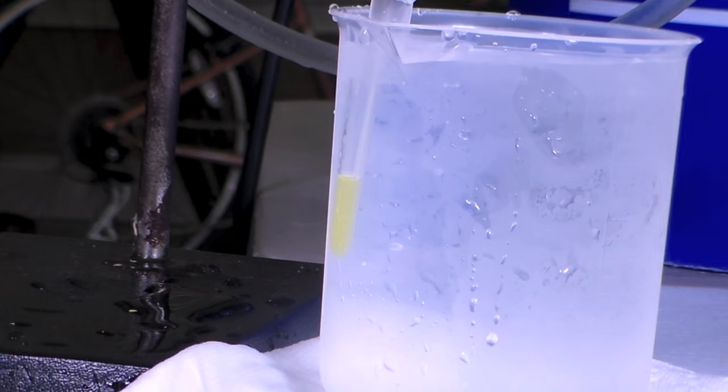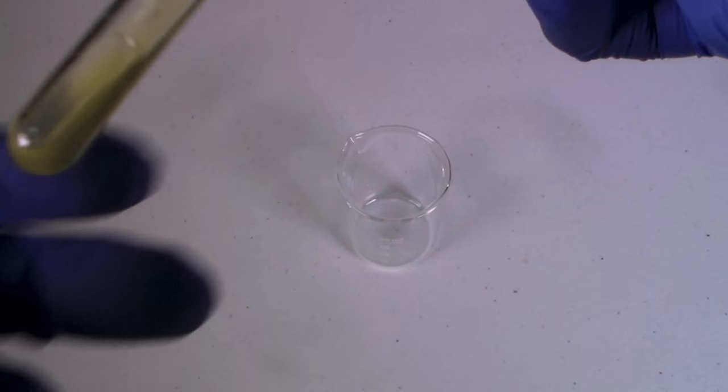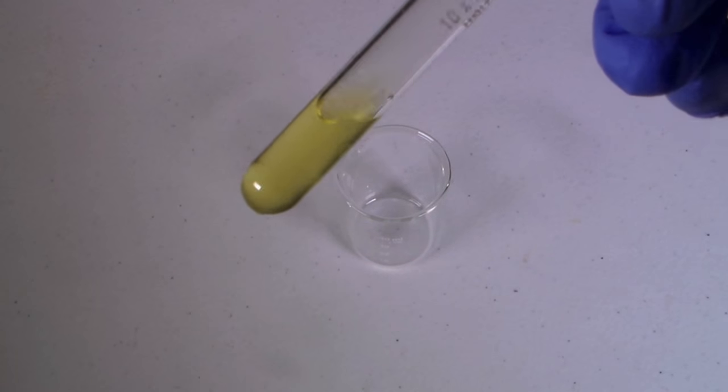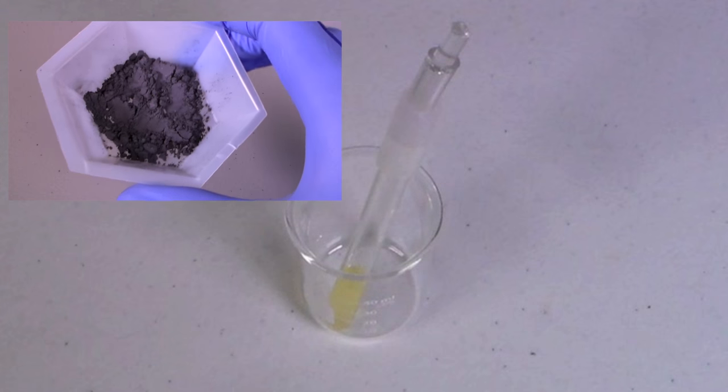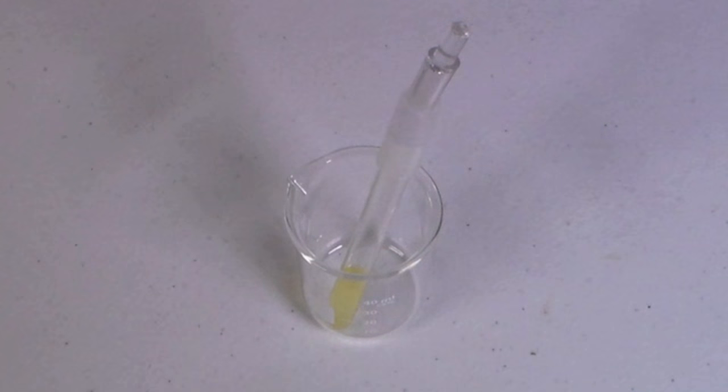In the test tube, you can see the beautiful liquid silicon tetrachloride product. When the test tube is removed from the ice bath, it is easy to see that it is yellow. Pure silicon tetrachloride should be clear, but mine is yellow likely because of iron impurities in the technical grade silicon powder that I used. It may also contain some dissolved chlorine.